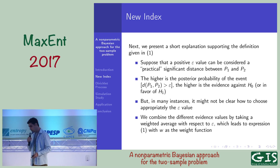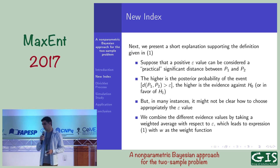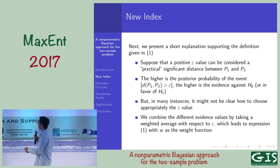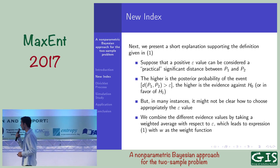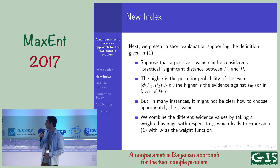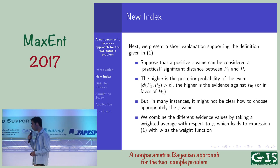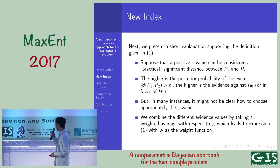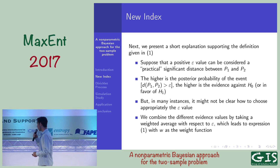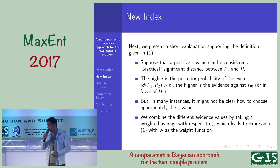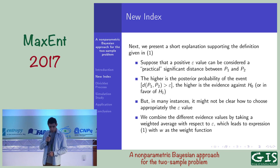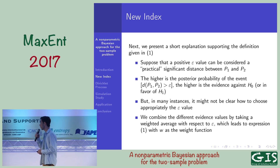Suppose that a positive epsilon value can be considered. The higher the posterior probability of the event that the distance between the populations is greater than epsilon, the higher is the evidence against the null hypothesis H0. But in many instances it might not be clear how to choose epsilon appropriately. So we combine the different evidence values by taking a weighted average with respect to epsilon, which leads to expression 1.